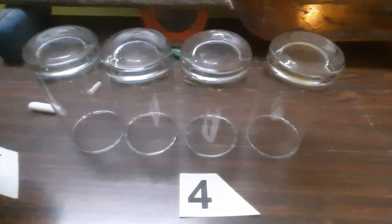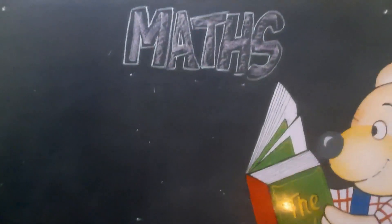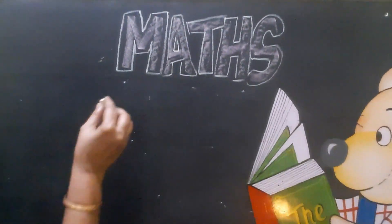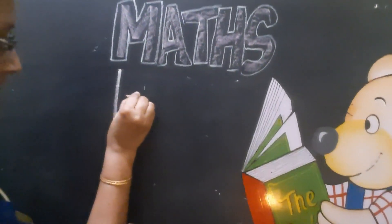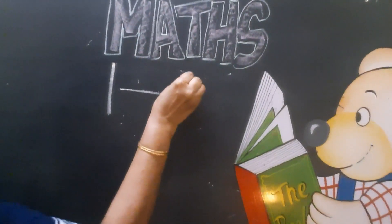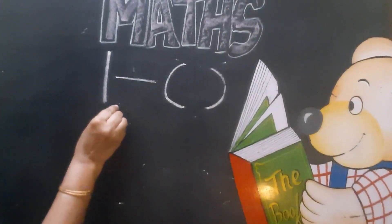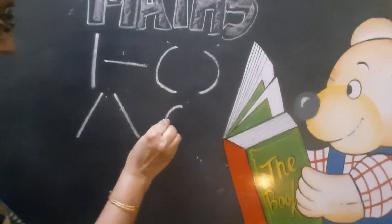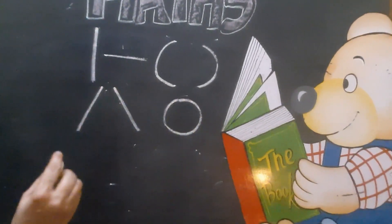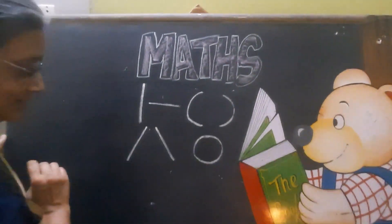Now we learn how to write number 4. But before that, we practice some pattern writing. First we draw standing line, then slipping line, curve, curve, slanting line, slanting line, and circle. Now we write number 4 with the help of pattern writing.